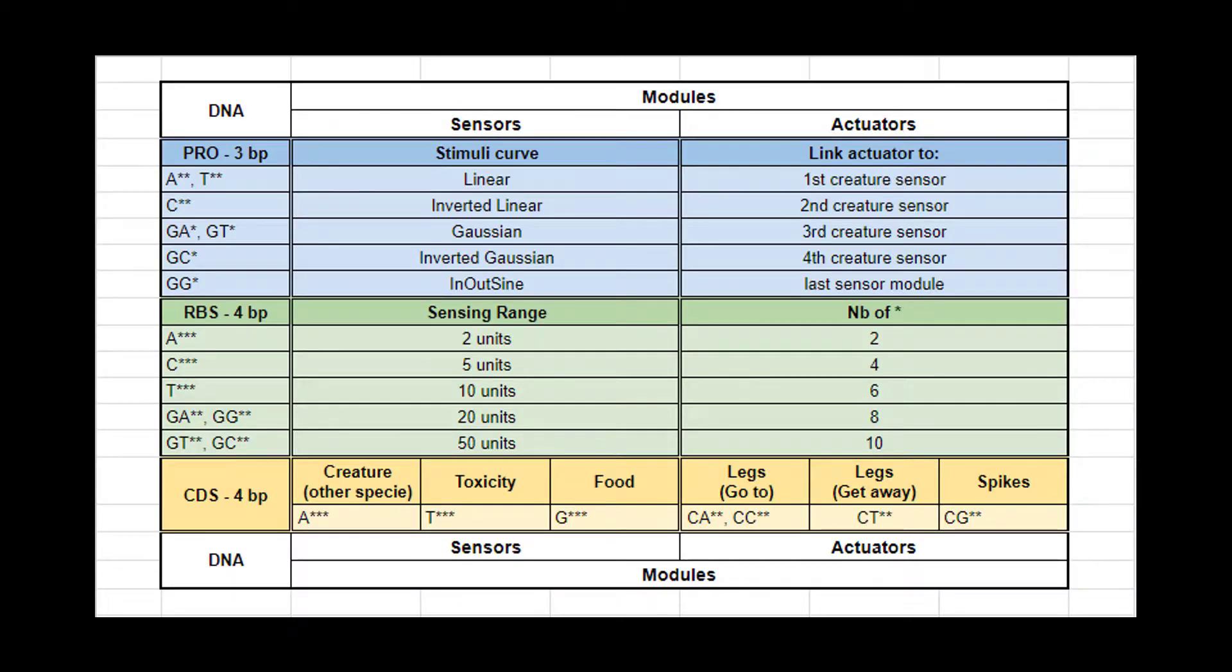For example, a leg module can be listening to a food sensor. When the food sensor senses food, it will tell the leg to start moving. This can create complex emergent behavior without needing brains or neural networks.